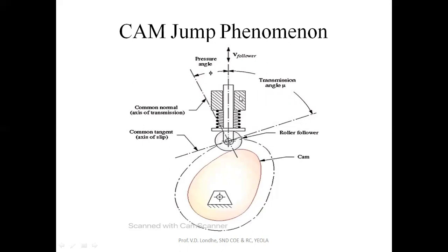So what is the cam jump phenomenon? Initially when the cam is rotating, it has 360-degree angular motion. The follower, due to the spring, will be continuously in contact with the cam. When the cam rotates, there will be rise, dwell, and fall positions. The most common application of this cam and follower system is in the IC engine valve system.